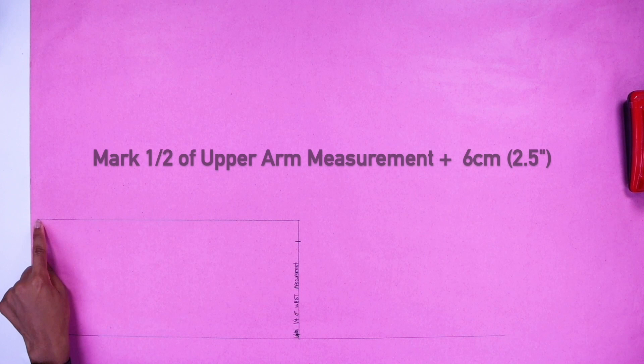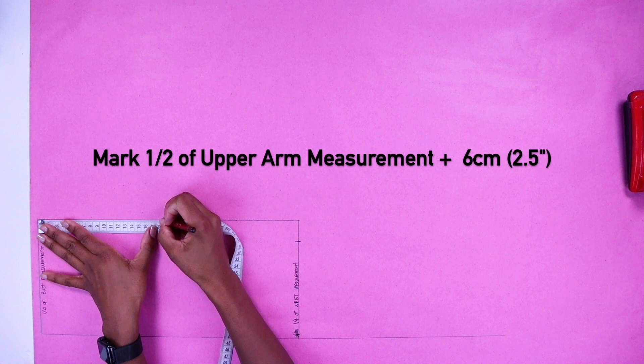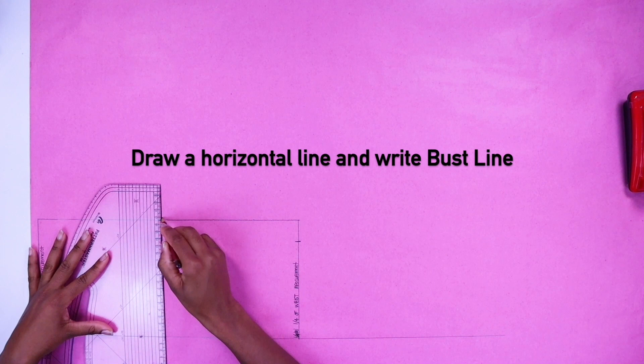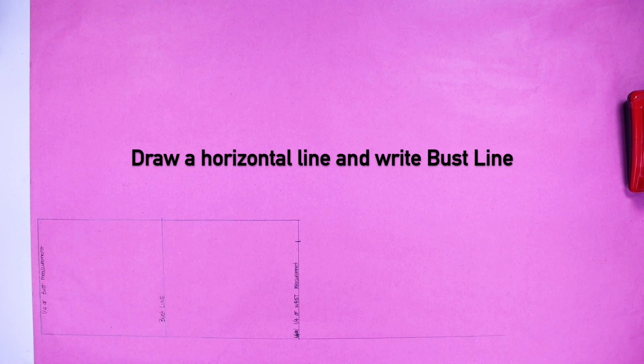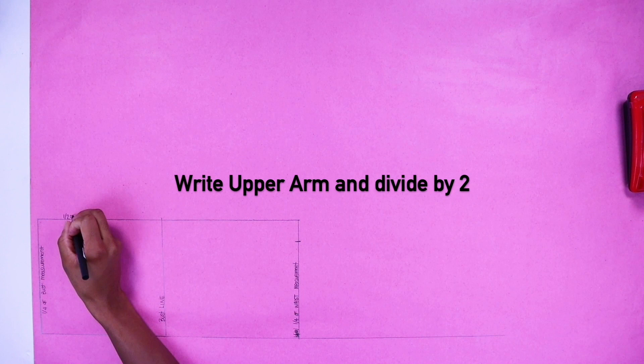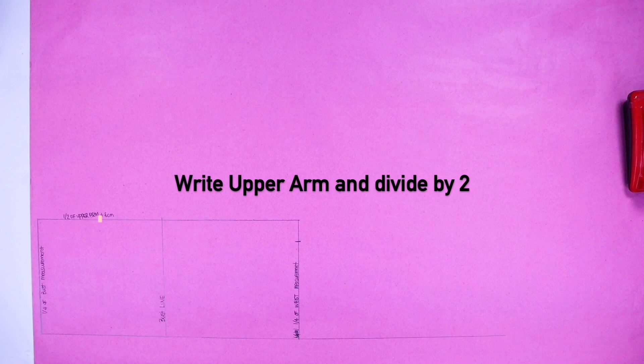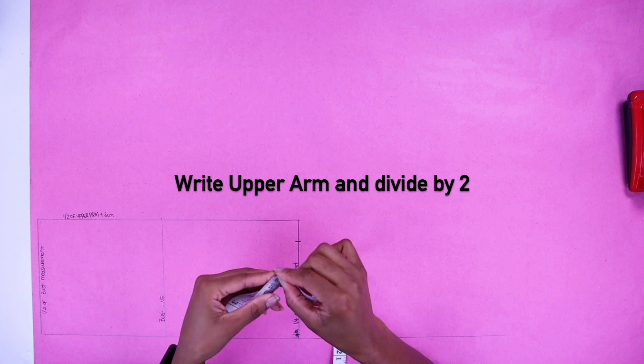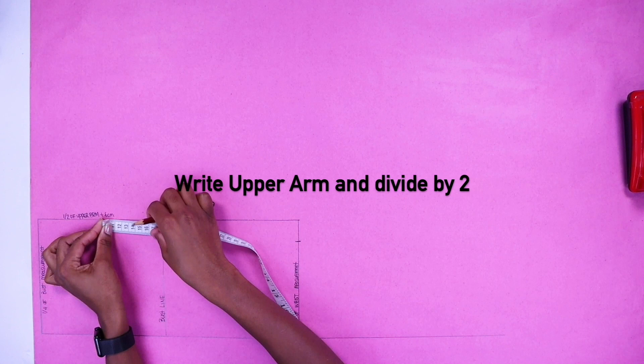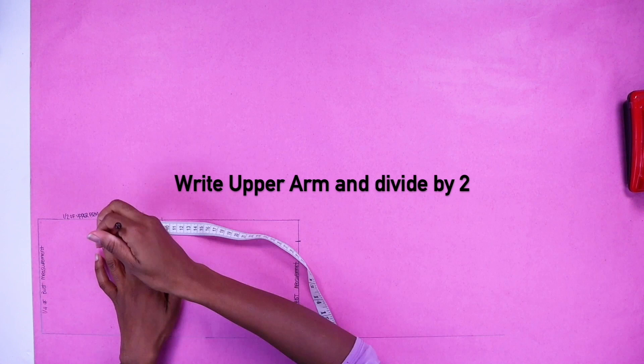Mark one half of your upper measurement plus six centimeters and draw horizontal line and write down bust line. So we need to divide this line by two. Do like I do, just get your measuring tape, fold down in half and then you get the measurement for it. So next draw horizontal line.